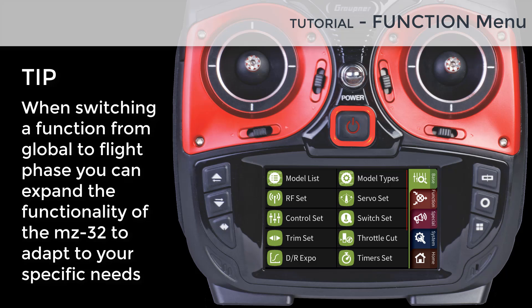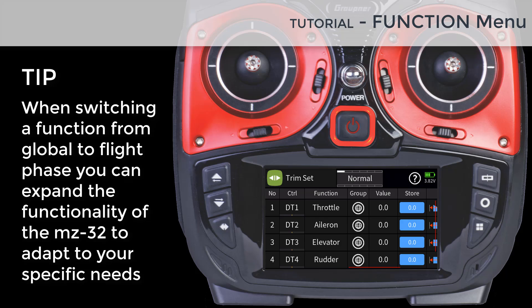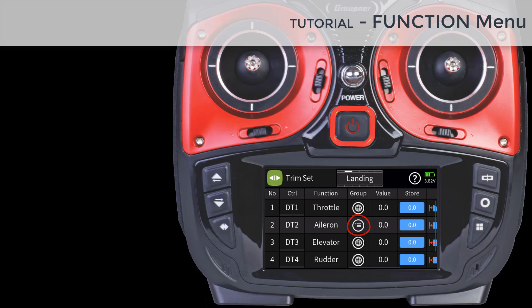For example, in Fast Flight you may prefer a different type of CRIM settings, or maybe you would like to have different dual rates and expos for each flight phase. Assigning a function to a phase is done by switching to the flight phase you would like to assign the function to, and tap on the group icon, which will change the function from Global to the active flight phase.